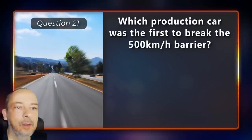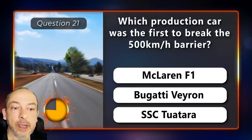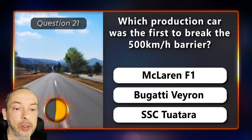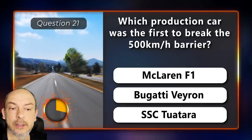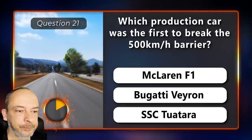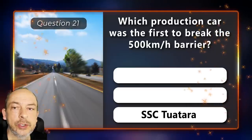Which production car was the first to break the 500 kilometers per hour barrier — McLaren F1, Bugatti Veyron, or the Tuatara? The Tuatara.